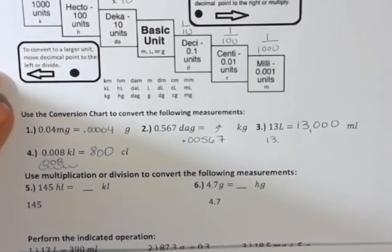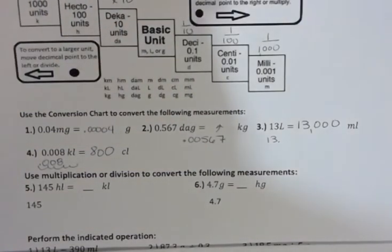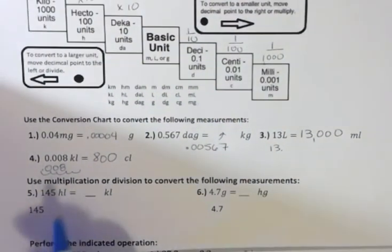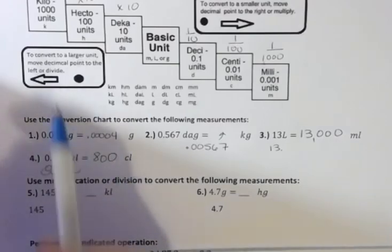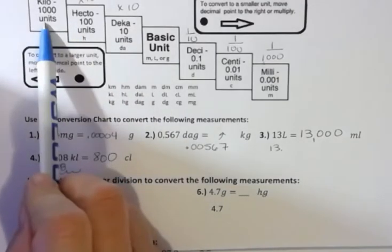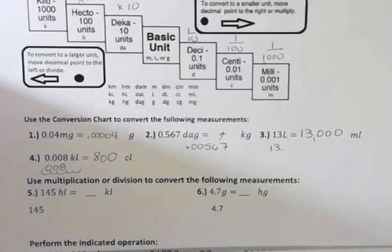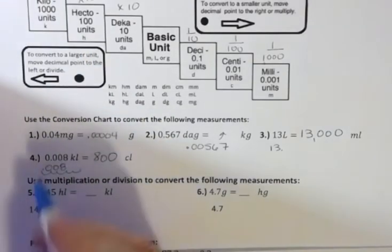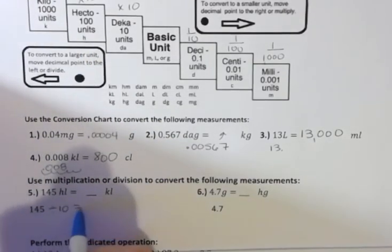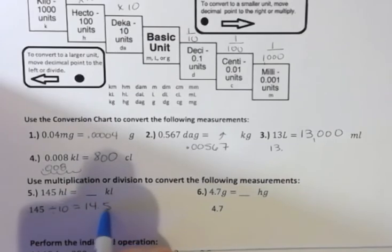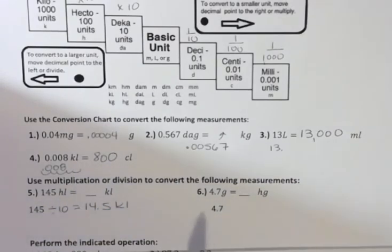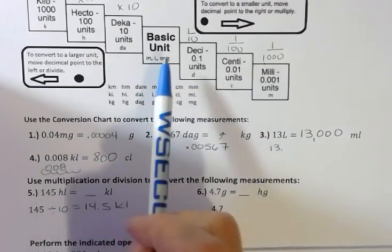If you want to think about it with multiplication or division, we can think about it this way: if I wanted to go to hectoliters to kiloliters, I'm going one place to the left and one step is a ten, so I'm going to divide by ten. If I divide by ten, that's going to give me 14.5 as I move to the left.